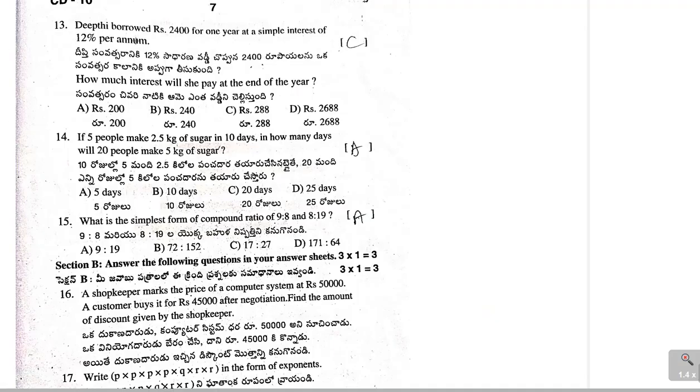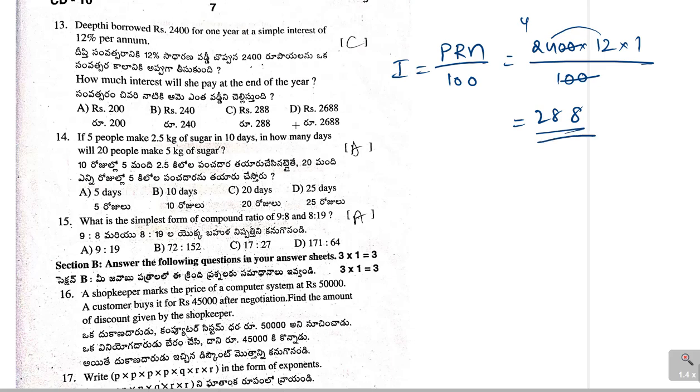Next one, Deepti borrowed Rs 2400 for one year at a simple interest of 12% per annum. How much interest will she pay at the end of the year? We need to find out the interest. I equal to PRN by 100 that is equal to P is 2400, rate is 12% per annum into n, number of years is 1, divided by 100. Two zeros, two zeros will be cancelled. 24 into 12. 12 times 4 is 48. Then, 12 times 2 is 24 plus 4. So, 28, 288. Option C is correct.